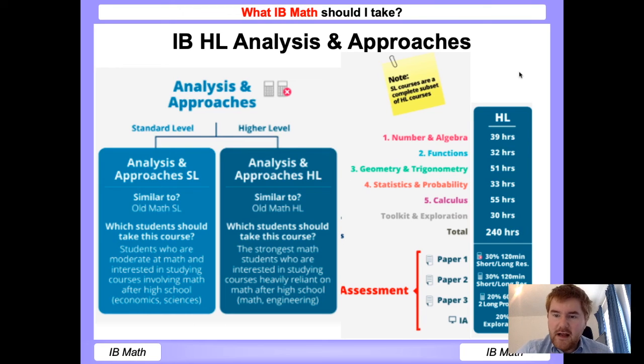This course is structured in the same way, so paper one and paper two have a mixture of short and long answer questions. Paper one is non-calculator, paper two is calculator. You've also got the coursework option here as well, which is worth 20%, and you can see how it's distributed here.